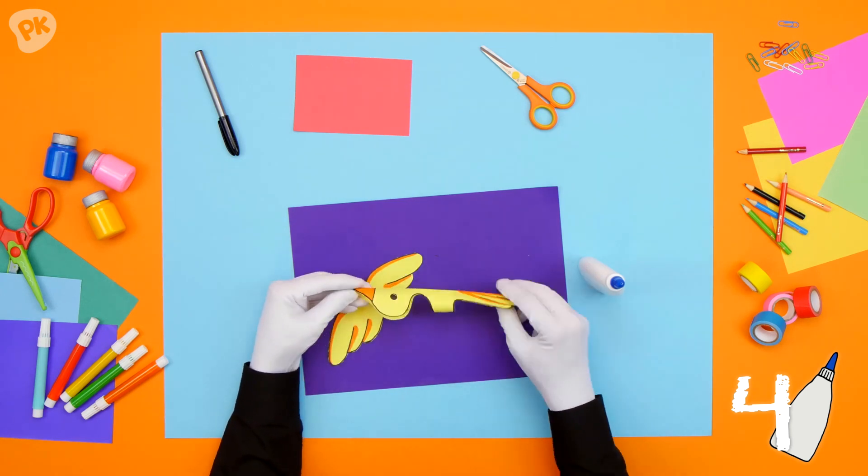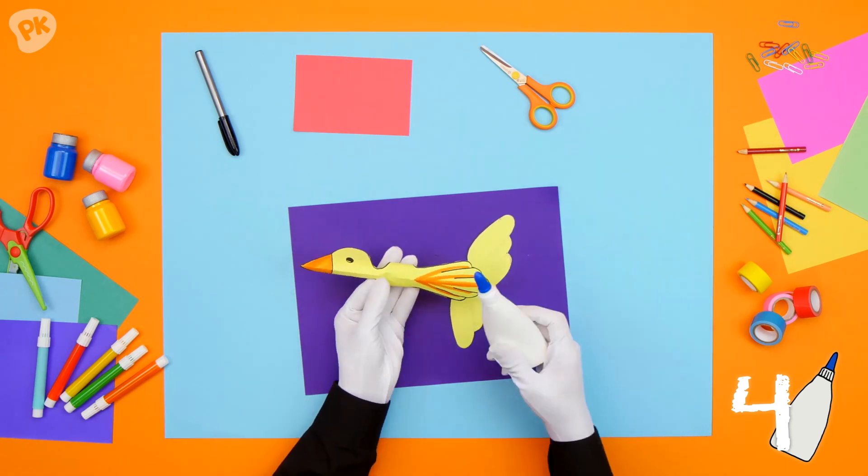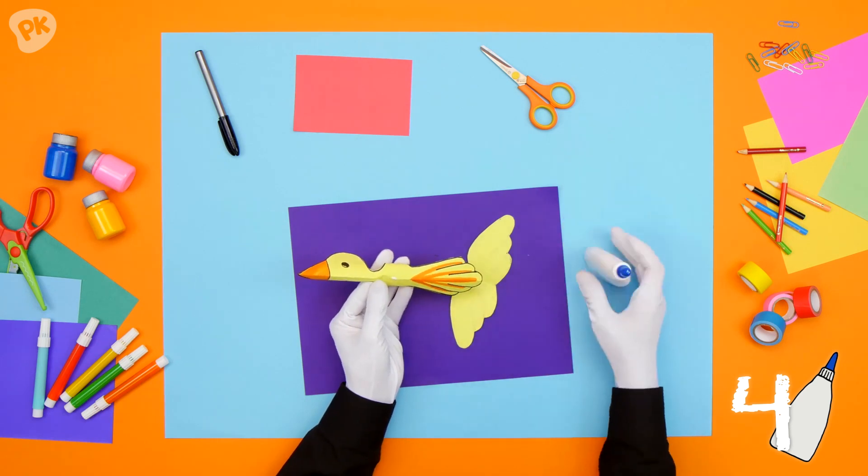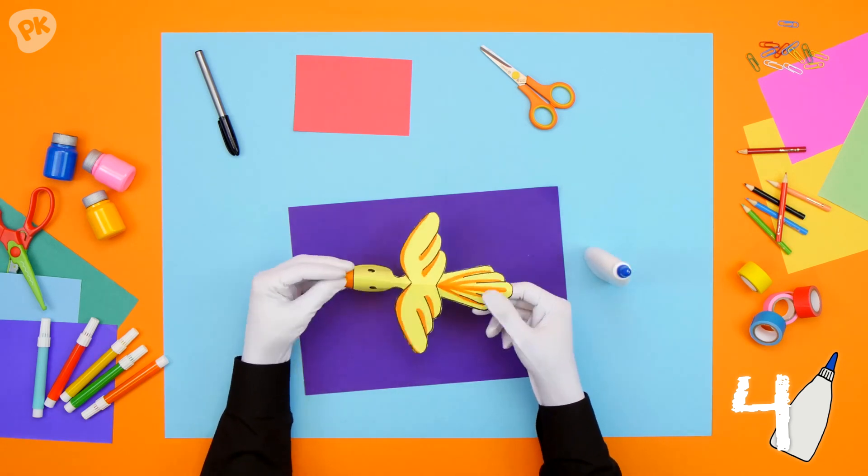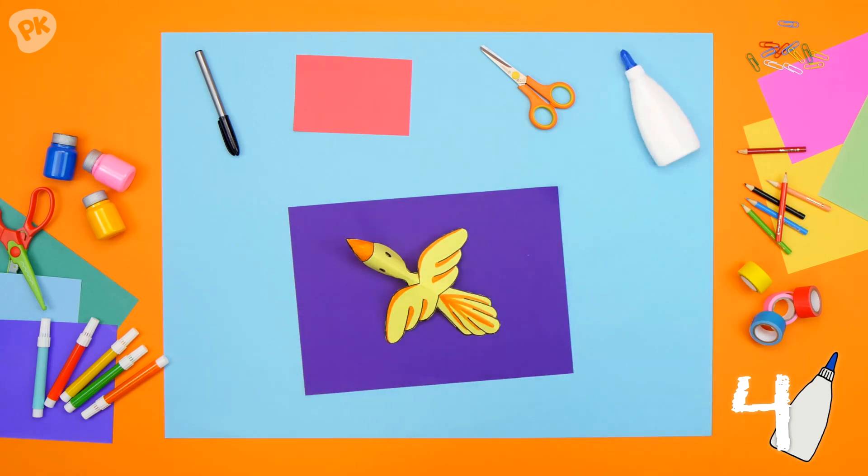Good, good. Oh, and don't forget to glue on the wings. Add some glue to the back of the bird's body and stick those beautiful wings on top. And that's it!